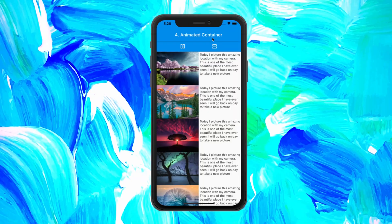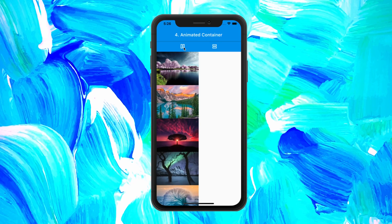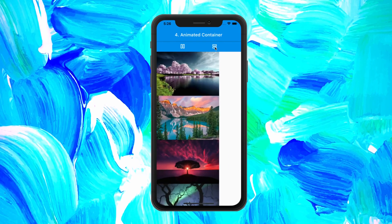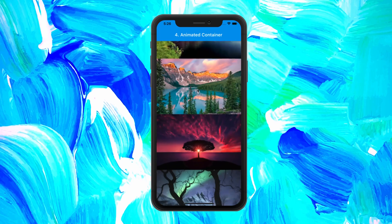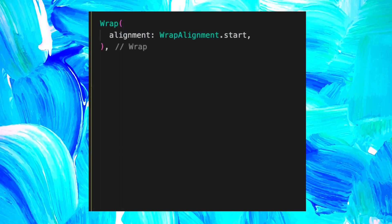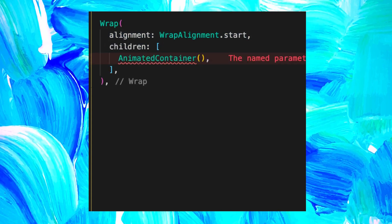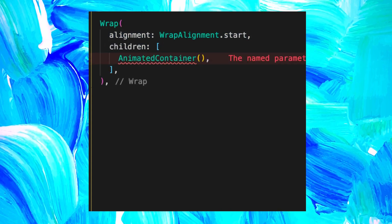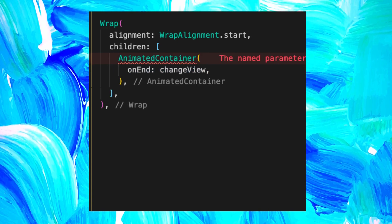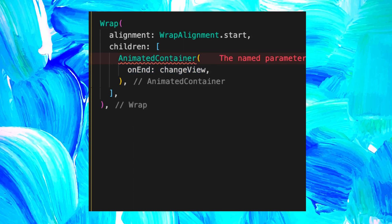The next one will be the AnimatedContainer. For this example, we added an image inside the container. To build this animation, we started with a wrap widget. Inside we used the alignment.start. And then inside the children, we used the AnimatedContainer. We added the onEnd function that will be triggered at the end of the animation in order to make the text appear or disappear.